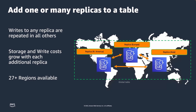There's no real hard limit to the number of regions that can participate in a global tables configuration. The pictures we've been looking at showed two regions, but you could have three, four, eight, or ten regions — however many you want, up to all of the regions available within your AWS configuration. Of course, the more regions you add, your storage costs and write costs will increase because we have to write that copy of the data across more and more regions. But DynamoDB will be there in all of those regions you need.